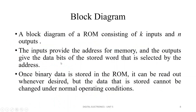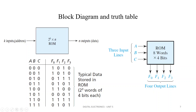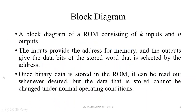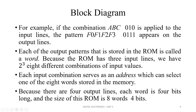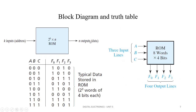The input provides the address for memory and the output gives the data bits of the stored word selected by the address. Once binary data is stored in ROM it can be read out whenever desired, but the data stored cannot be changed under normal operating conditions. For example, if combination ABC = 010 is applied to the input line, the pattern F0, F1, F2, and F3 = 0110 appears on the output line.